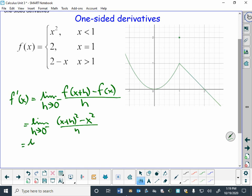Which is our limit as h approaches 0 from the left of x squared plus 2xh plus h squared minus x squared over h.